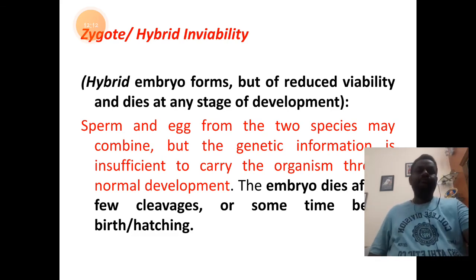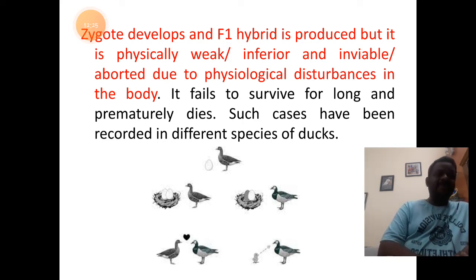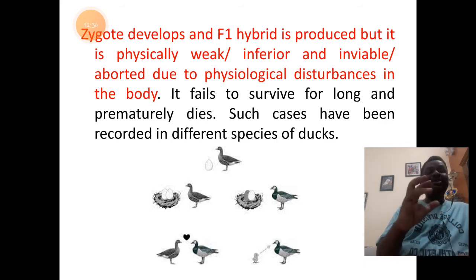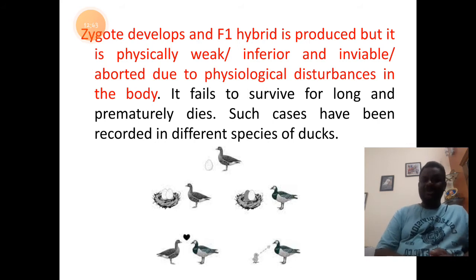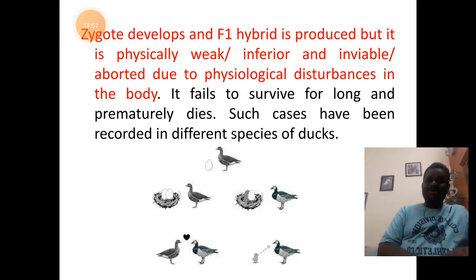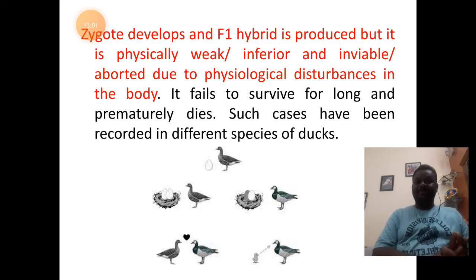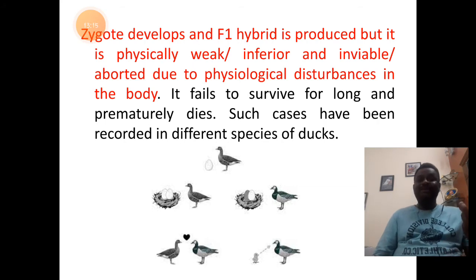The zygote develops and the F1 hybrid is formed, but this offspring physically becomes weak or is of inferior variety. Physiological disturbances occur in their body, so when a weaker genetic makeup is given for a hybrid, they tend to have abnormalities with their physiological processes and will not survive — they die prematurely. This occurs in case of species of ducks, where closely related two species form eggs but those eggs will form hybrids which are weaker and die soon.